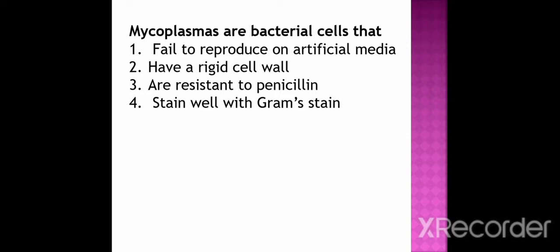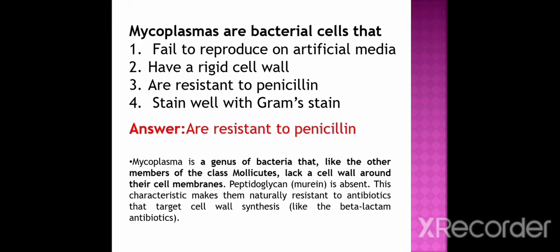Next question: Mycoplasma are bacterial cells that — fail to reproduce on artificial media, have a rigid cell wall, are resistant to penicillin and stain well with gram stains, or are resistant to penicillin. Mycoplasma is a genus of bacteria that, like other members of the class Mollicutes, lack a cell wall around their cell membrane. Therefore, peptidoglycan or murein is absent in Mycoplasma, making them particularly resistant to antibiotics that target cell wall synthesis like beta-lactam antibiotics. Penicillin is also a beta-lactam antibiotic.